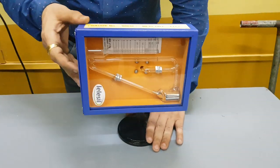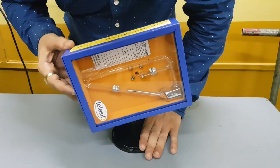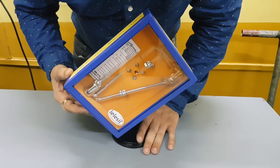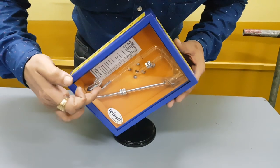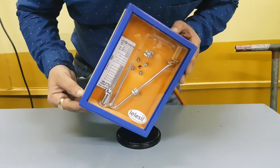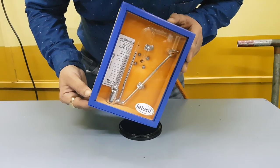McLeod gauge is a rotating gauge, you have to gradually tilt it. Here you would see mercury rising into the guide tube, gradually it will fill into the capillary.